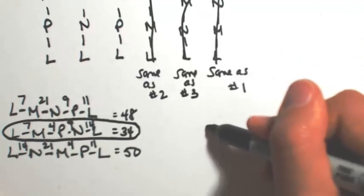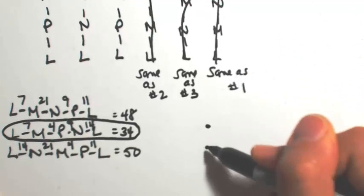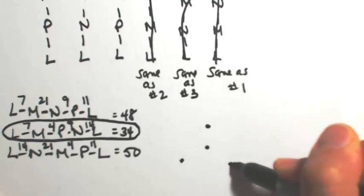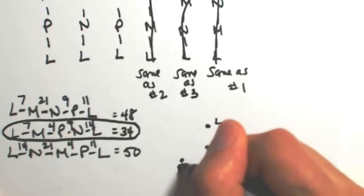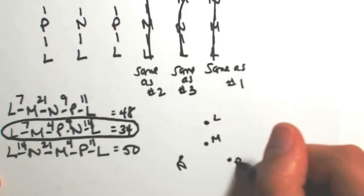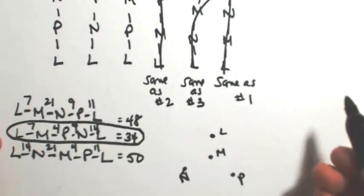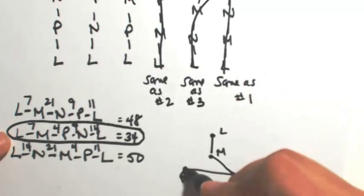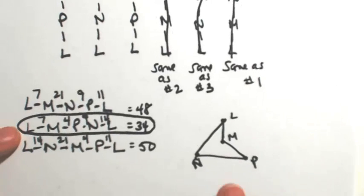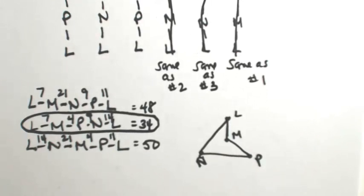If I were to just kind of do a rough sketch here, L, M, N, and P. L to M, M to P, P to N, N to L. That one is going to be our optimal circuit.